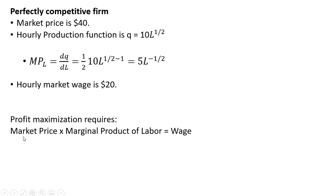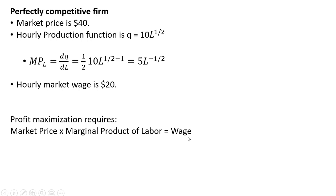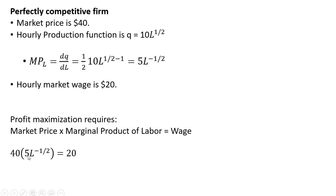So on the left-hand side we basically got the marginal benefit of hiring an additional worker, the added output multiplied by the price at which we can sell that output. And on the right-hand side here we have the marginal cost, what we need to pay to hire one more worker, and that's simply going to be the market wage. So plugging everything into this formula, market price of 40, the marginal product of labor, and then set that equal to the wage. And now we're going to solve this equation for L.